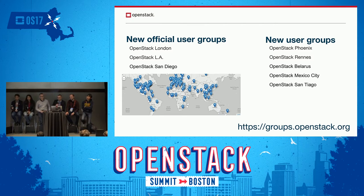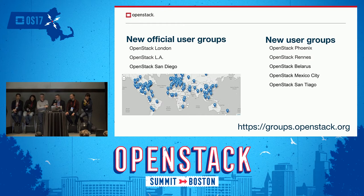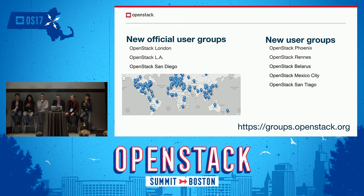We have some new official user group statuses. For example, there's a new official user group in London in Europe, and also new official user groups in Los Angeles and San Diego. What this official status means is that we have some requirements against the groups — they need to have a very diverse organizer set up, and they need to do meetings very regularly, whether that's every three months, every month, or every week, depending on the local group. Also, it must not be driven by only one company. You can find all these rules on the OpenStack Ambassador page at groups.openstack.org.